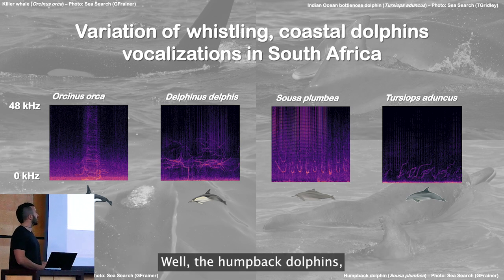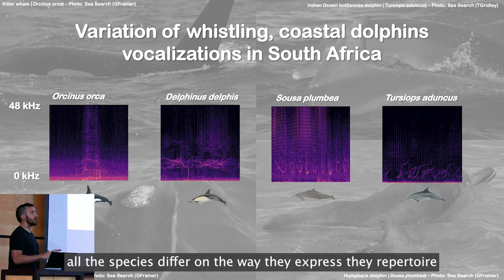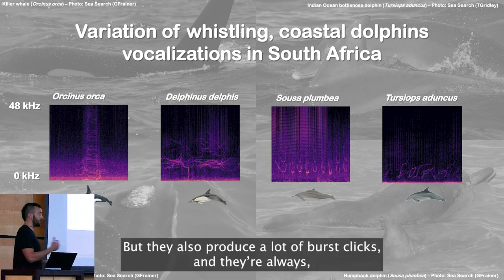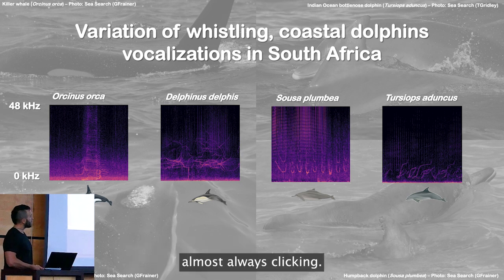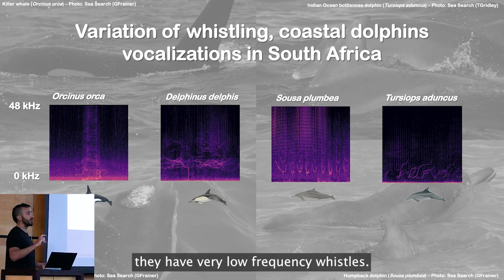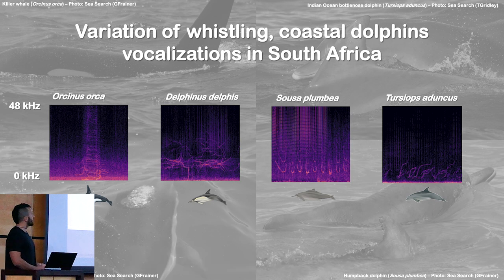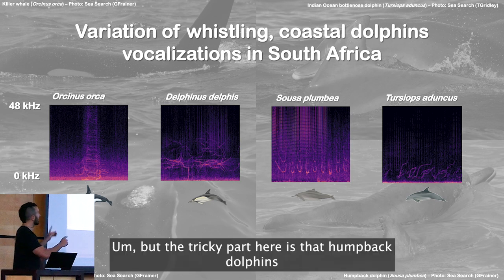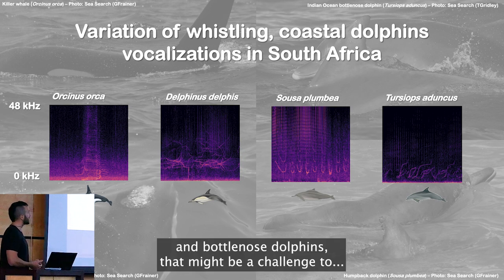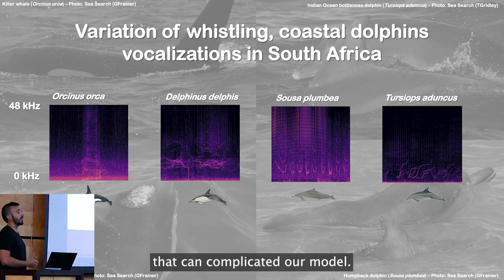The humpback dolphin and all species also differ in the way they express their effort. Humpback dolphins don't produce too many whistles, but they produce a lot of burst clicks and are almost always clicking. Bottlenose dolphins have very low frequency whistles. But the tricky part is that humpback dolphins might overlap whistles with common dolphins and bottlenose dolphins, which can complicate our model.